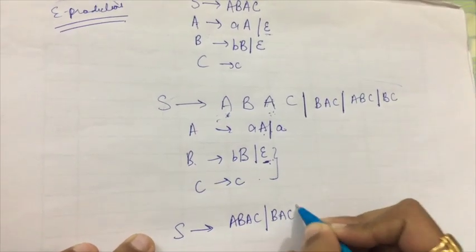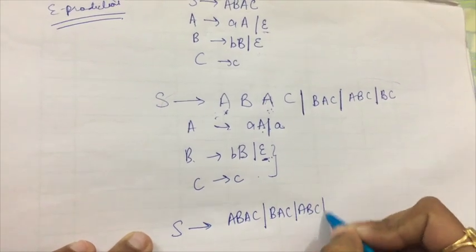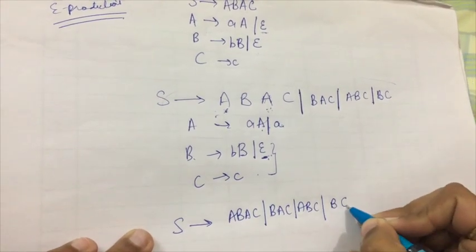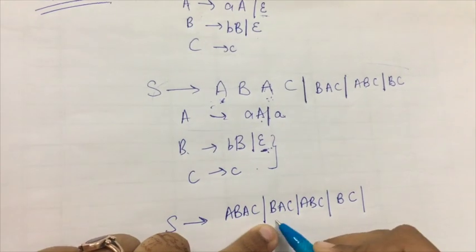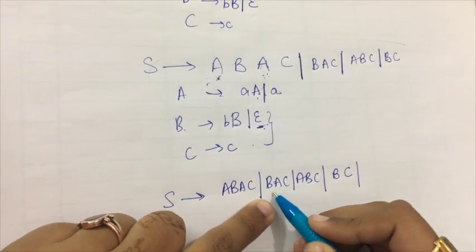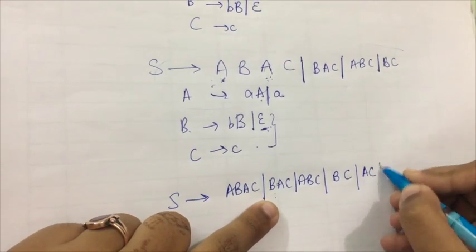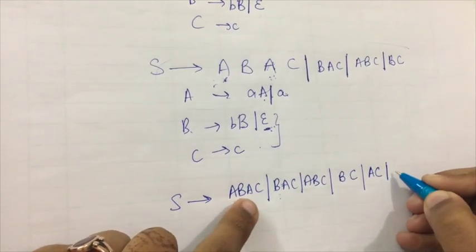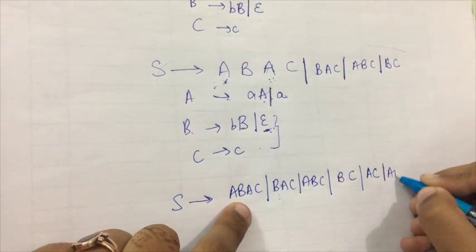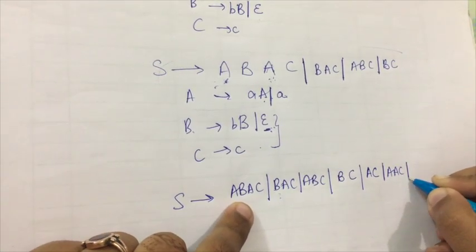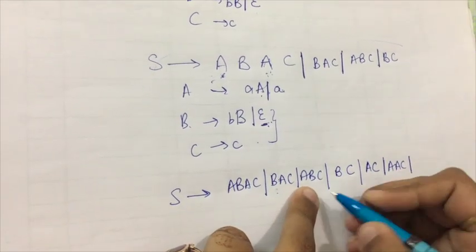So what I'll do is the production rules that S derives to would become—now just check it out wherever B is there. Whenever I put B as null over here, this thing. When I put B as null over here, what comes is this thing. When I put B as null in this production rule, it accounts to this.